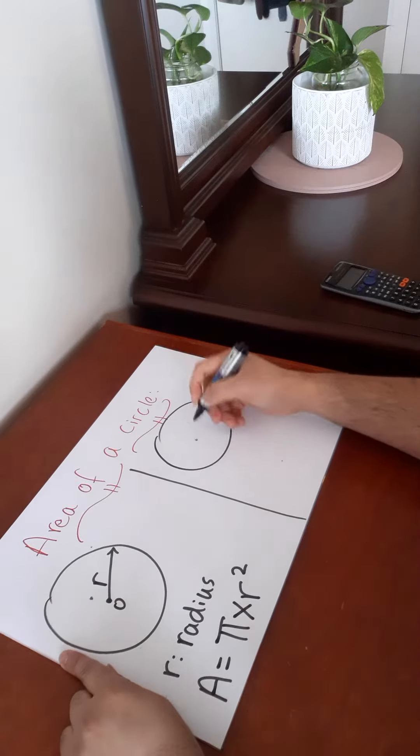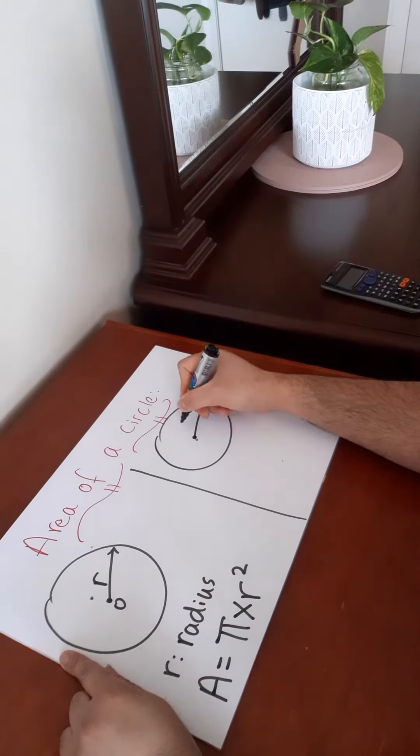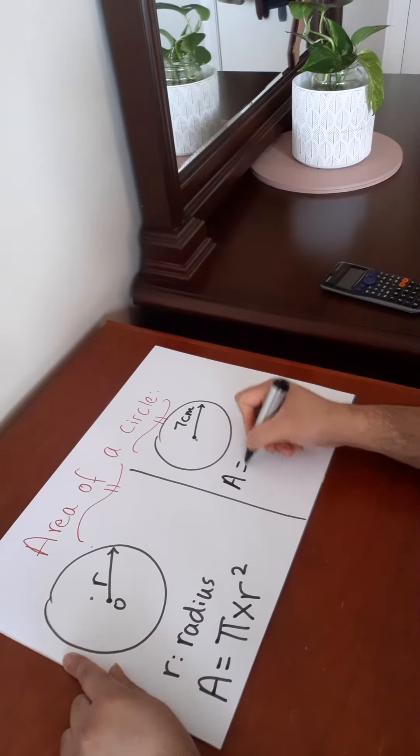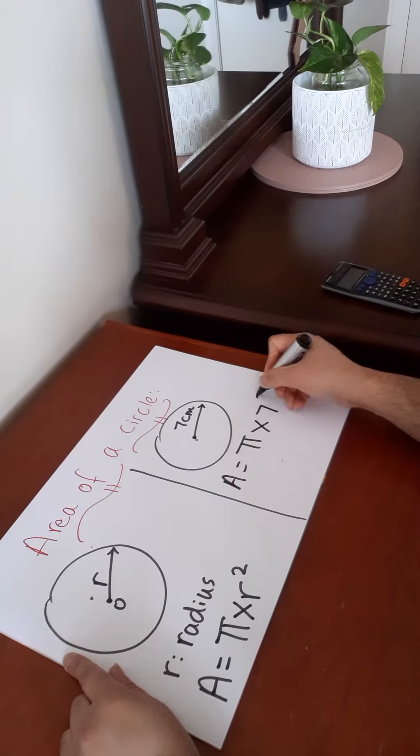Let's look at one example here. Find the area of a circle with a radius of 7 centimeters. So area equals pi times 7 squared.